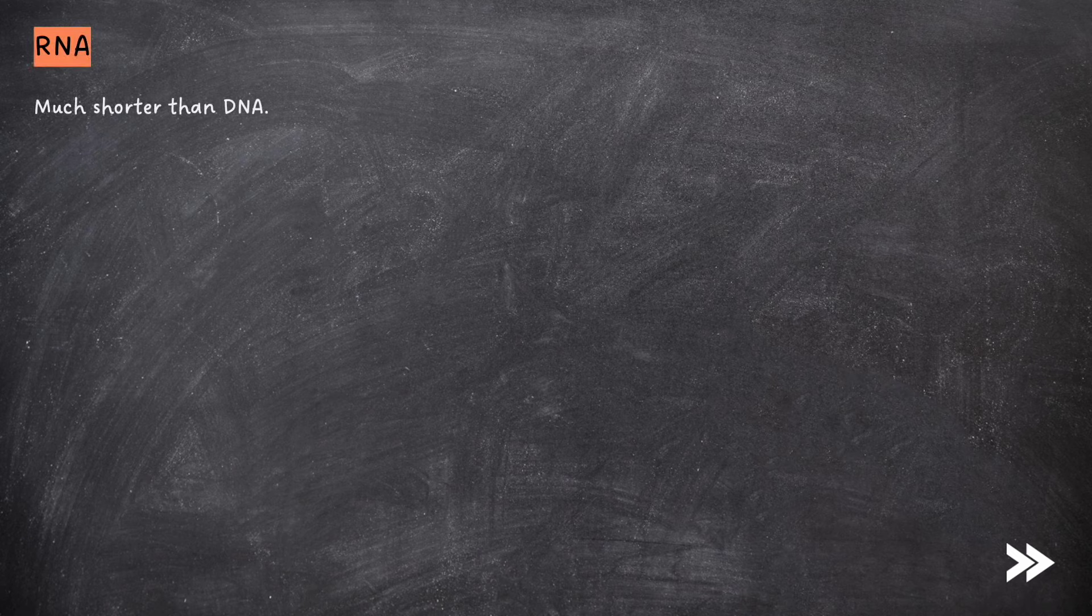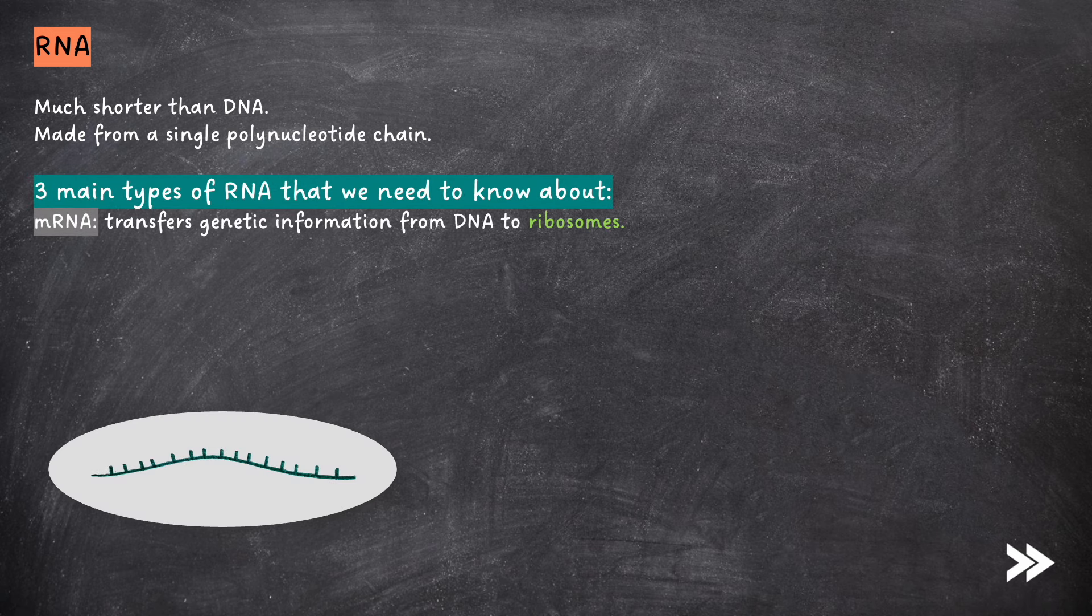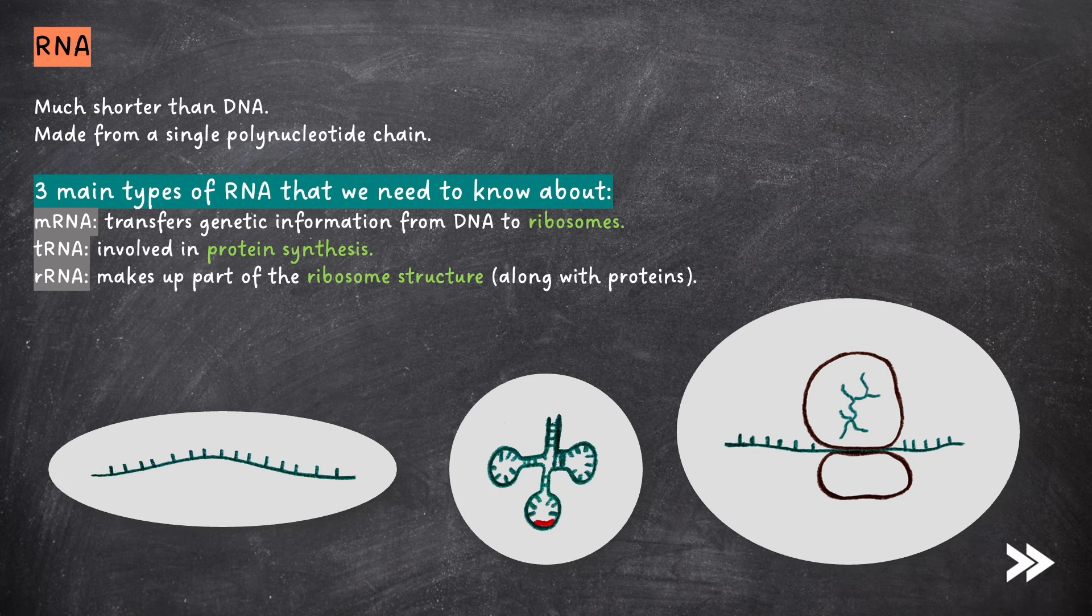Next, we'll move on to RNA, which is much shorter than DNA. RNA is made from a single polynucleotide chain. There are three main types of RNA that we need to know about. mRNA transfers genetic information from DNA to ribosomes. tRNA is involved in protein synthesis. And ribosomal RNA, rRNA, makes up part of the ribosome structure, along with proteins.